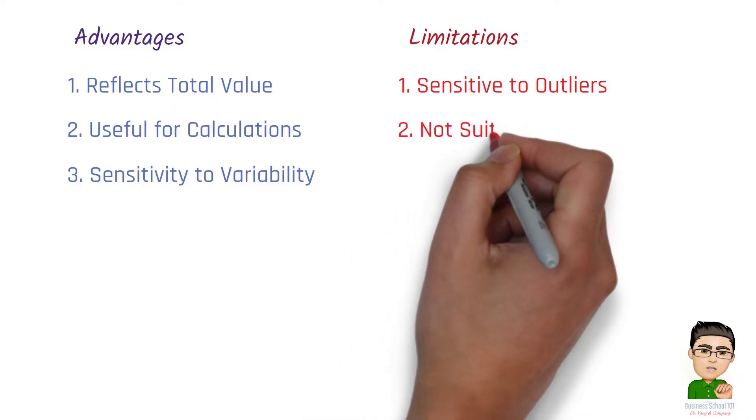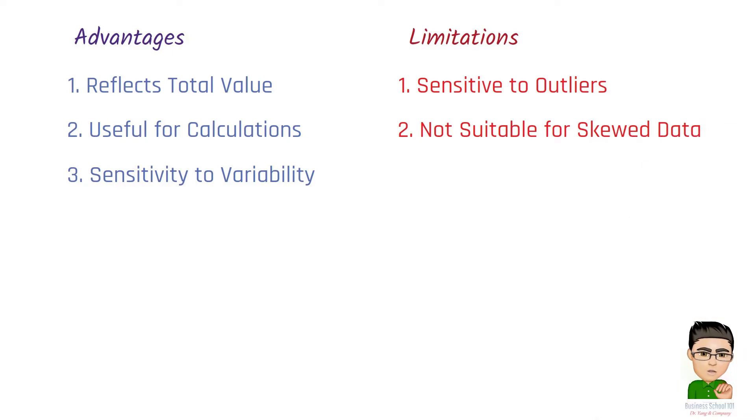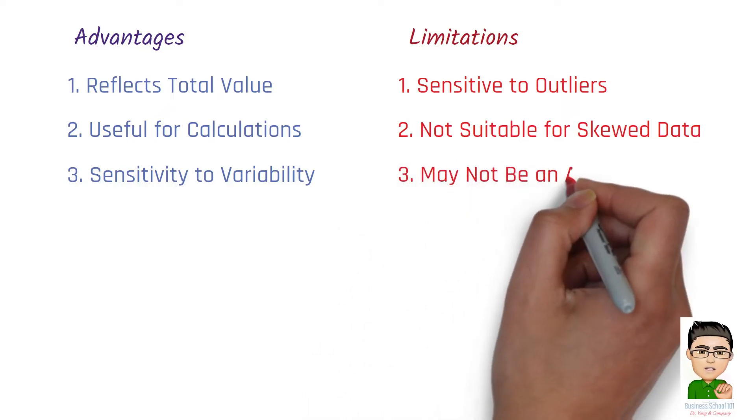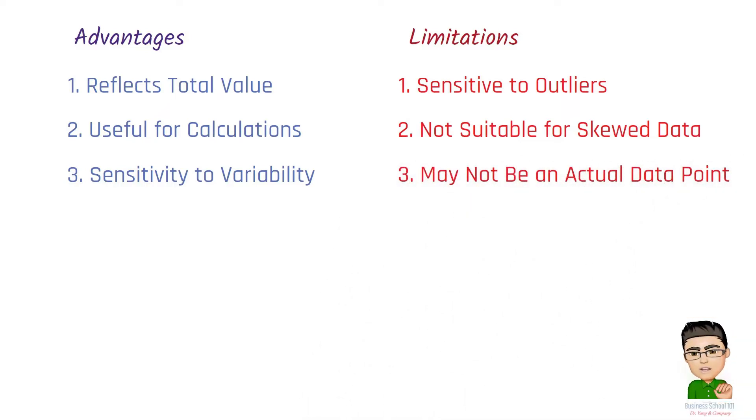Number 2, Not suitable for skewed data. In skewed datasets, where data is not evenly distributed, the mean may not represent the typical value. Number 3, May not be an actual data point. The mean may not correspond to an actual data point, especially in datasets with non-integer values.